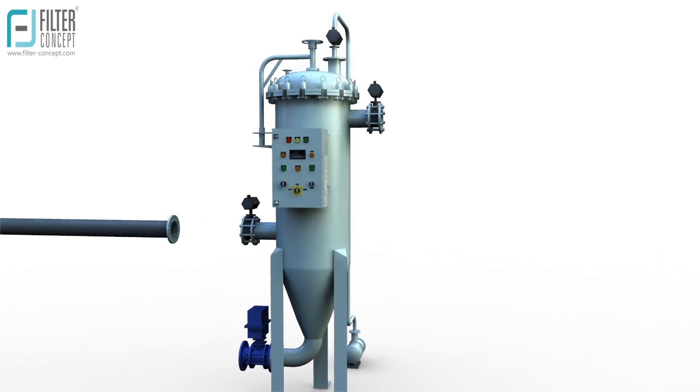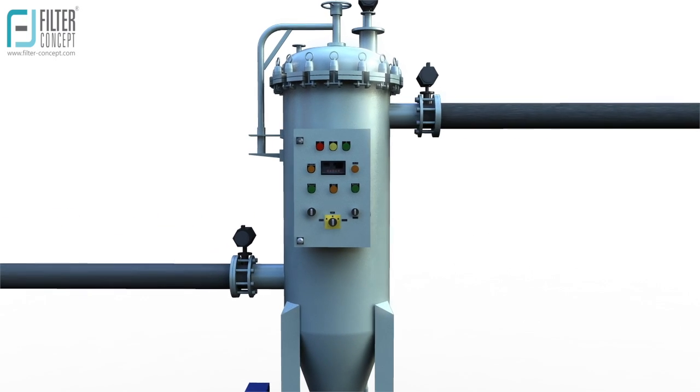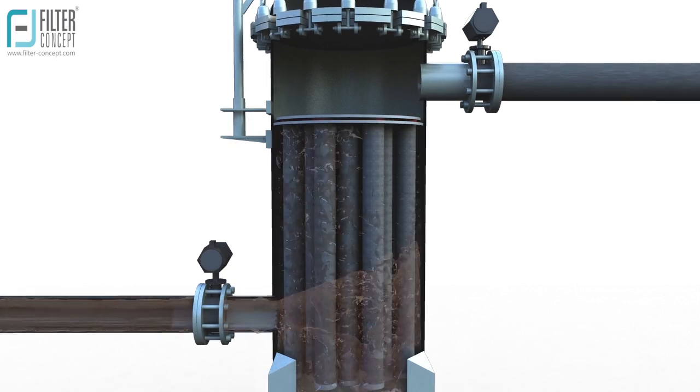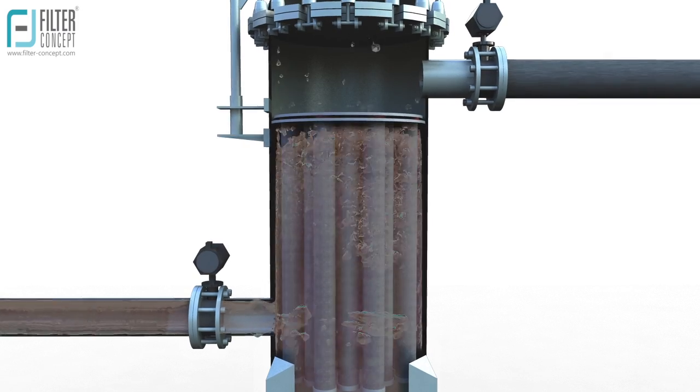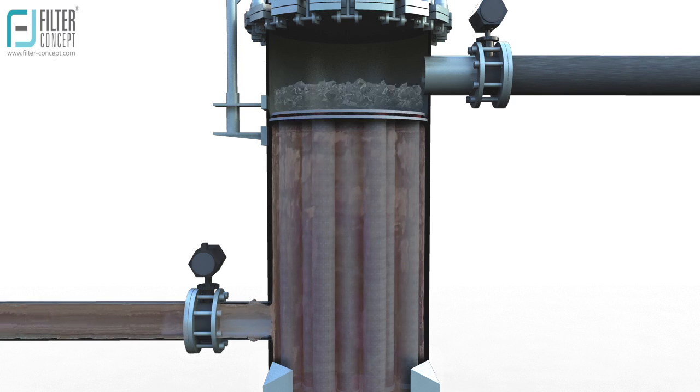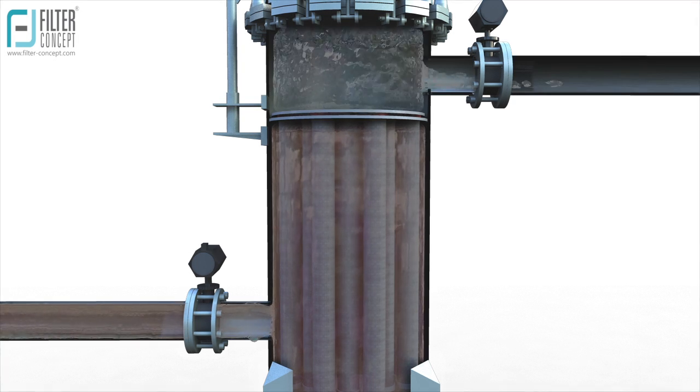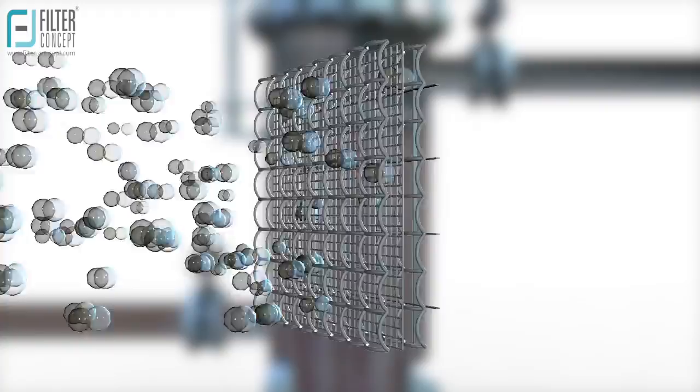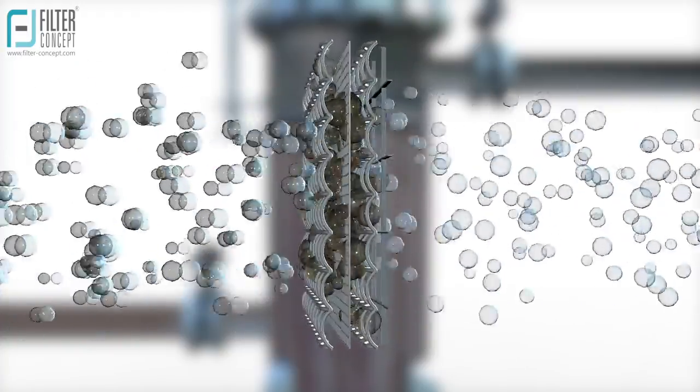Auto backwash self-cleaning filters work on a flow direction of outside to inside. Unfiltered fluid enters the filter housing through the bottom tangential inlet connection, and clean filtrate passes through the inside diameter of the element and is collected at the top tangential outlet. Contaminants are deposited on the outer surface of filter elements.